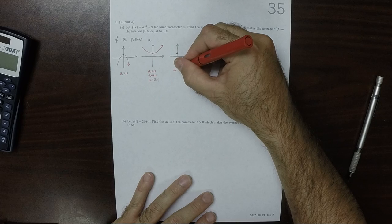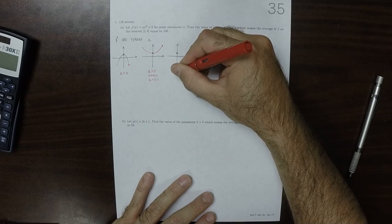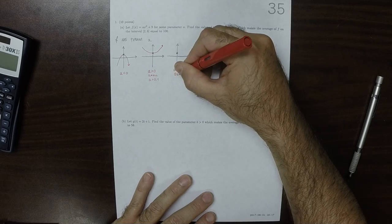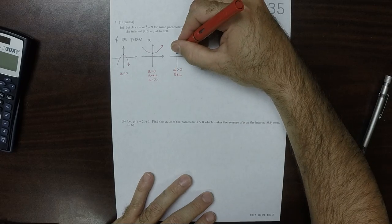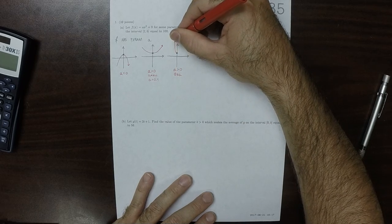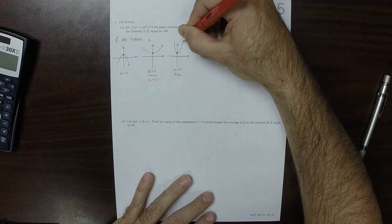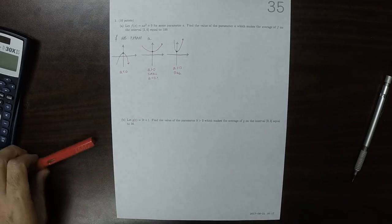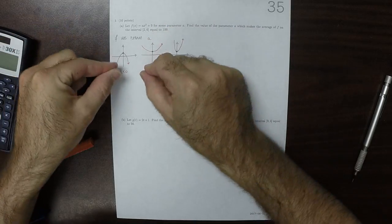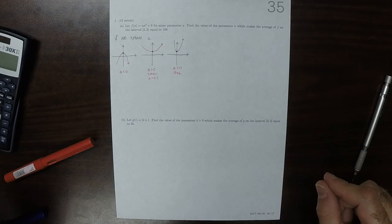If we do a positive a where it's big, then it'll make it open steeply. You can imagine that what a is doing, it's sort of telling you how much the parabola bends.